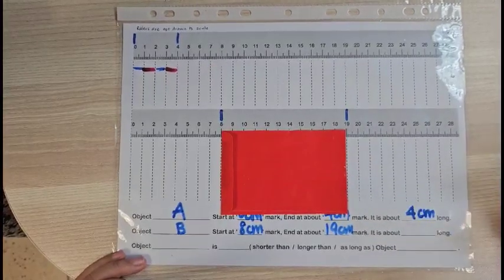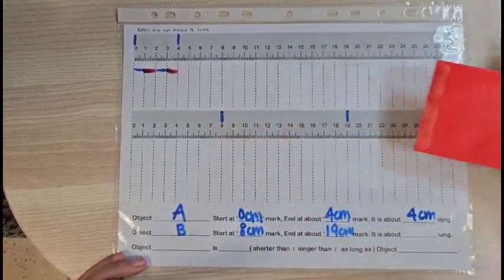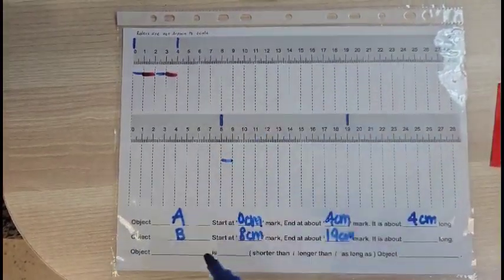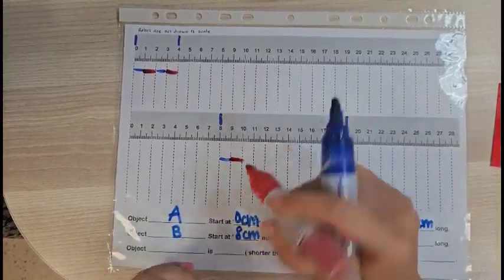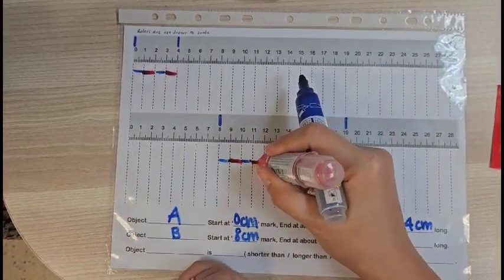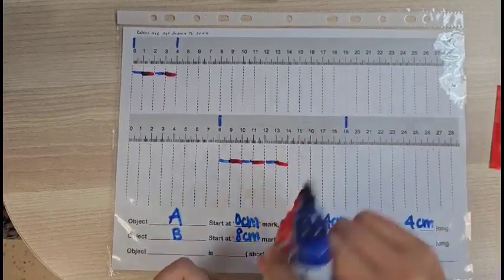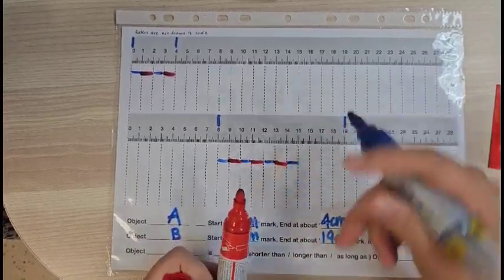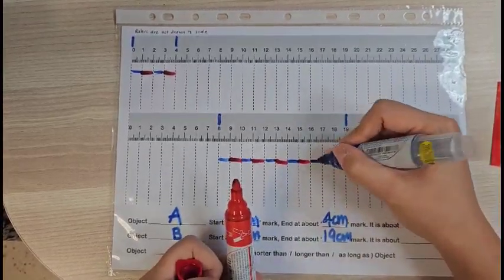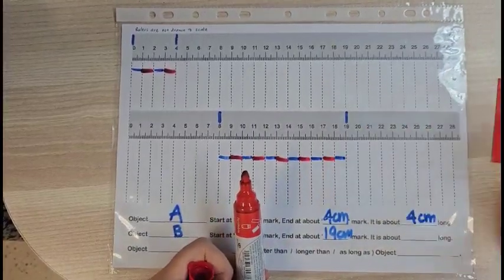So again, I will use the same strategy. How would I count the number of spaces? Let me take this away first. Now I count from 8, 1 space, 2 spaces, 3 spaces, 4 spaces, 5 spaces, 6 spaces, 7 spaces, 8 spaces, 9 spaces, 10 spaces, 11 spaces.